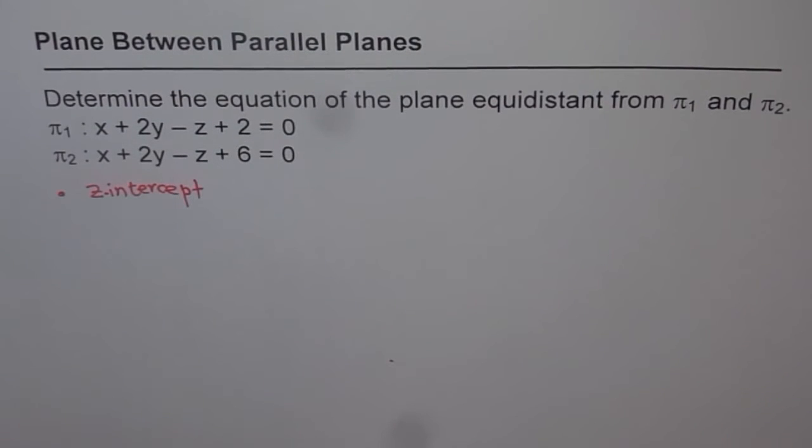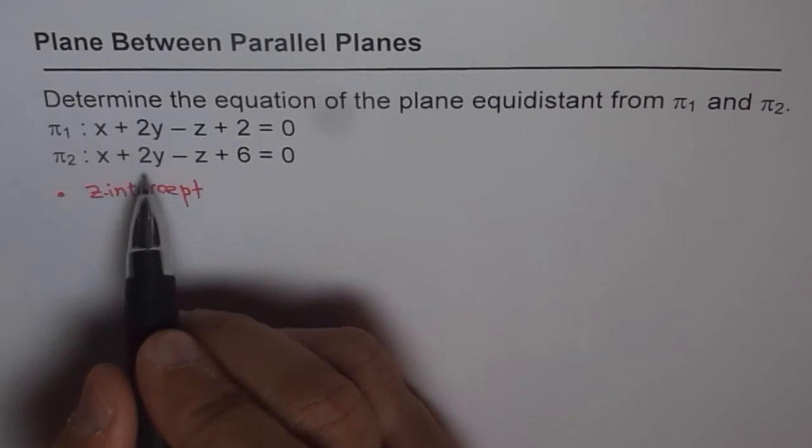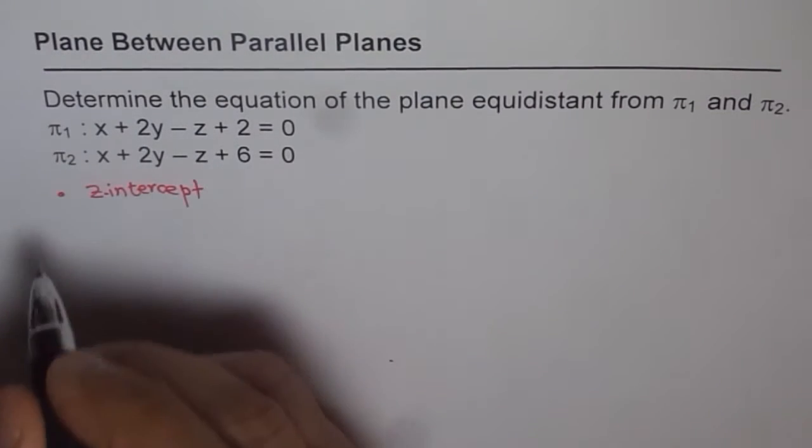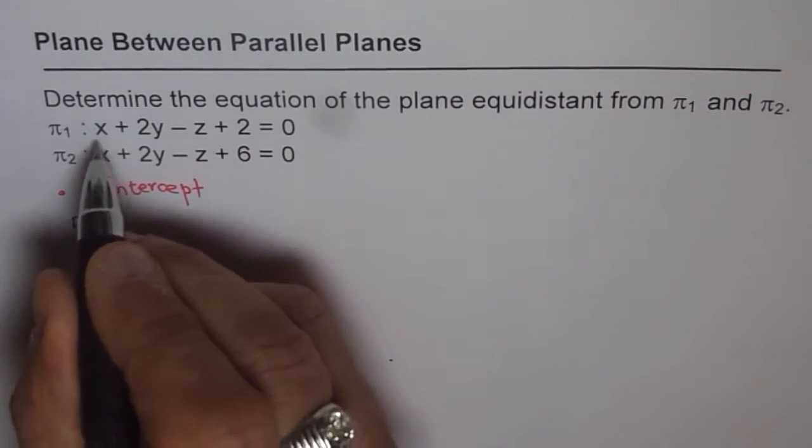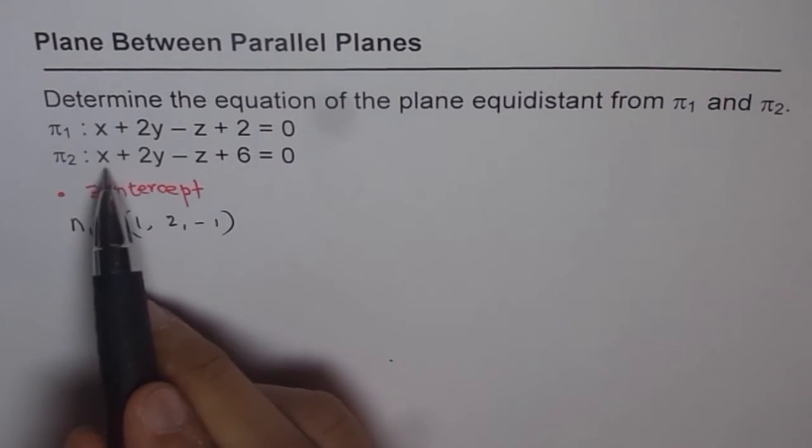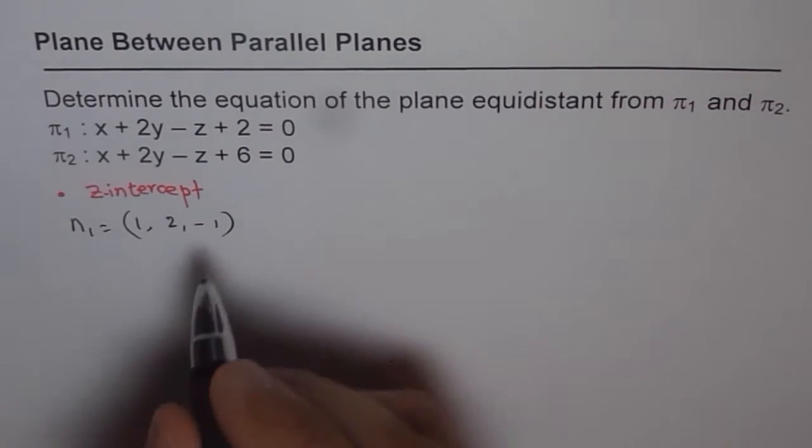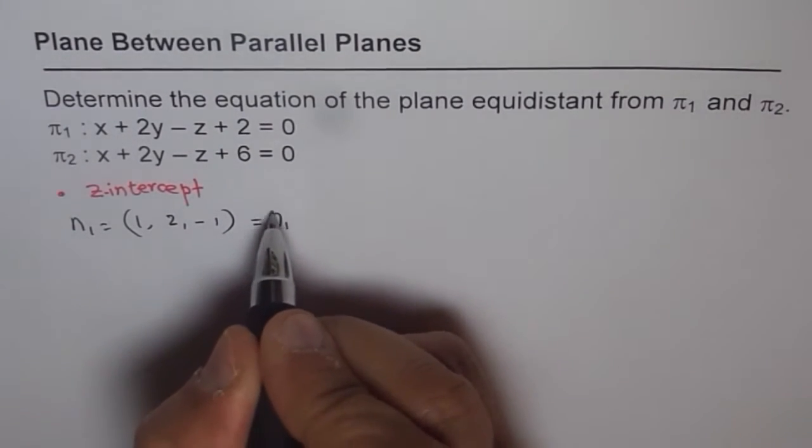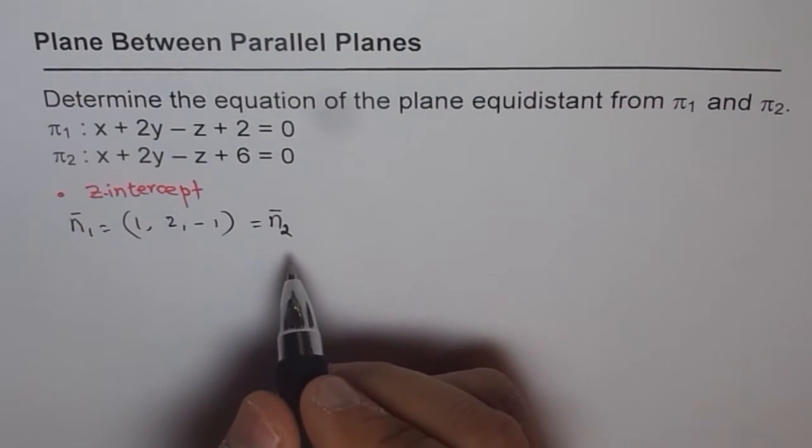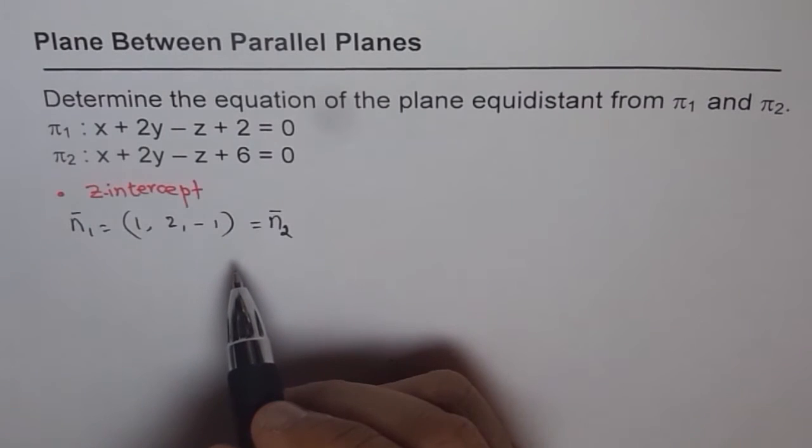In this particular problem, what we know is that the two planes are parallel since the normals are the same. The equation is x + 2y - z + 2, so that means n1 is actually (1, 2, -1). And for π2 also, it is exactly the same value. So both are parallel. Normal n1 equals normal n2, and since they are the same, their planes are parallel.